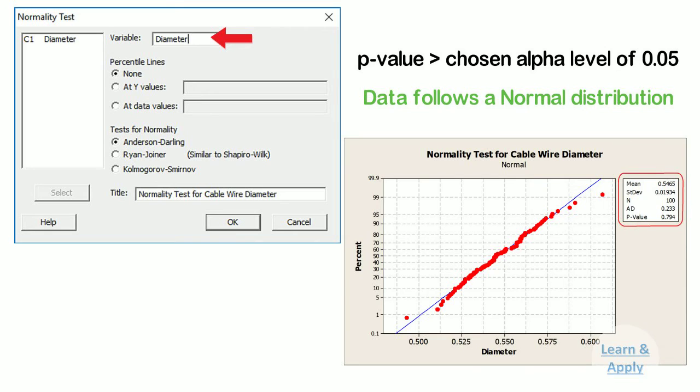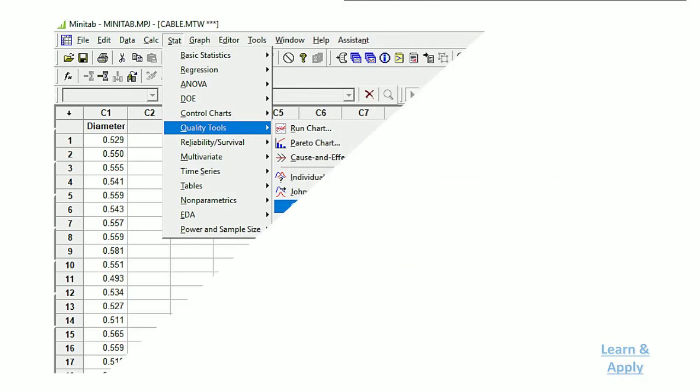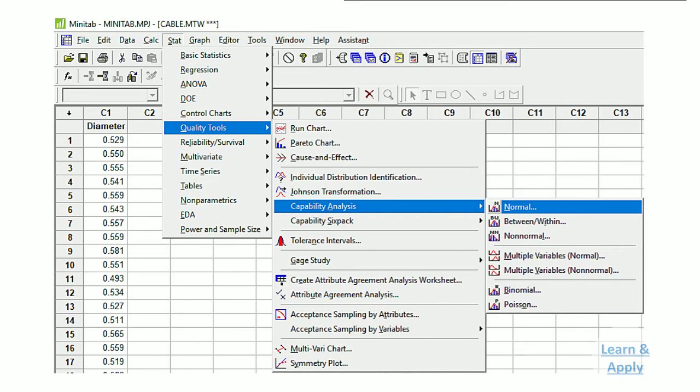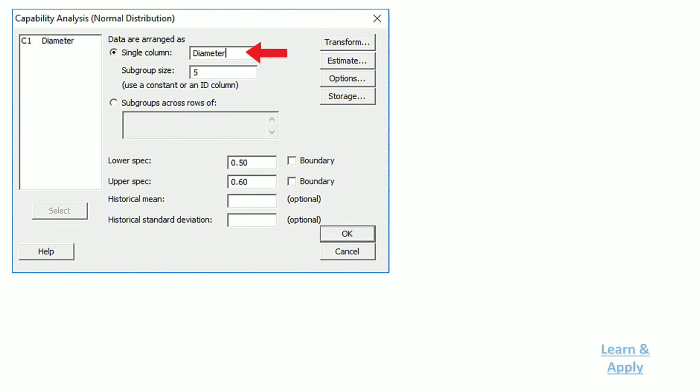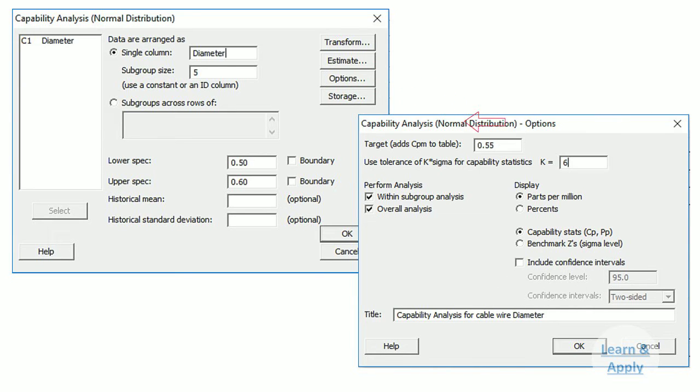To perform normal capability analysis to evaluate the diameter of the cables in relation to the specification limits, please follow these steps: 1. Select Stat, Quality Tools, Capability Analysis, and then Normal. 2. In single column, enter diameter. 3. In subgroup size, enter 5. 4. In lower specification, enter 0.50. 5. In upper specification, enter 0.60. 6. Click options. 7. In target, add CPM to table, enter 0.55 and add title for the graph. 8. Click OK in each dialog box to get the results. You will get the results of the study in the graph window.